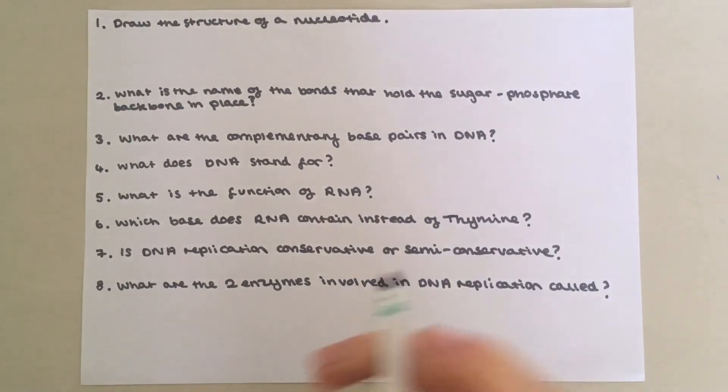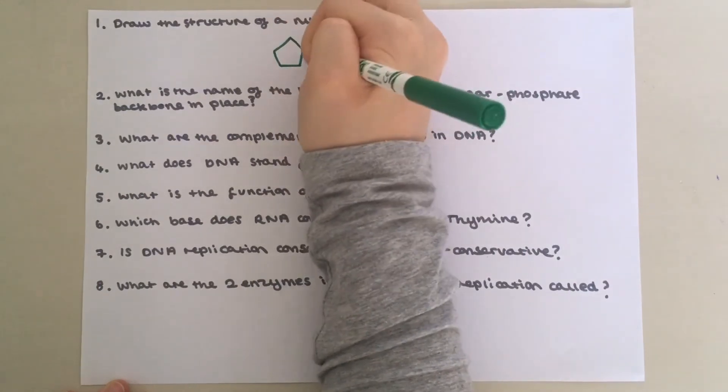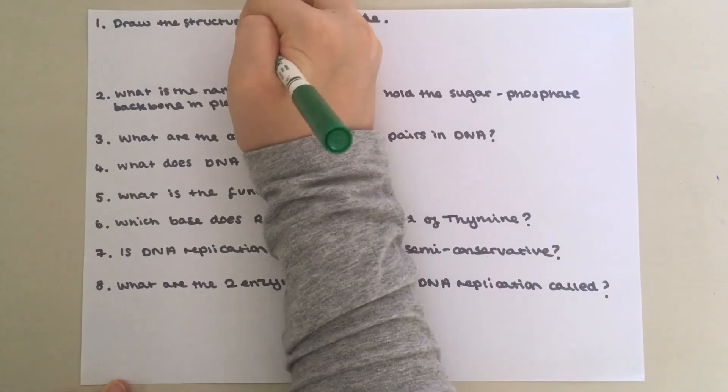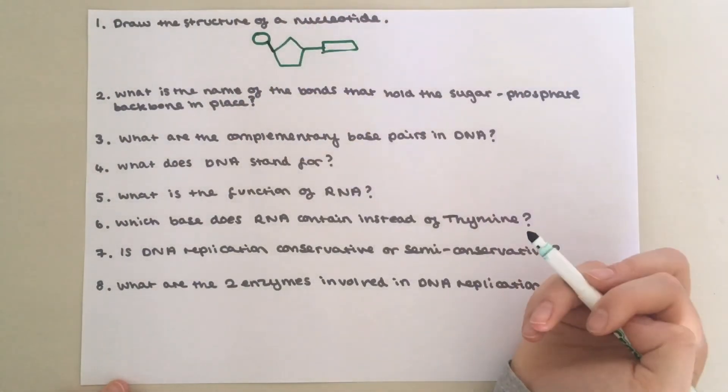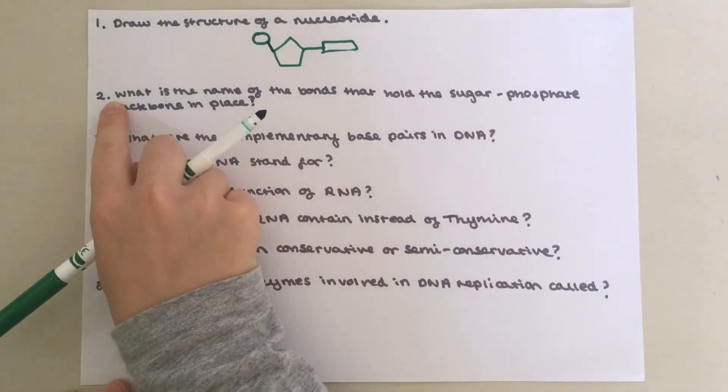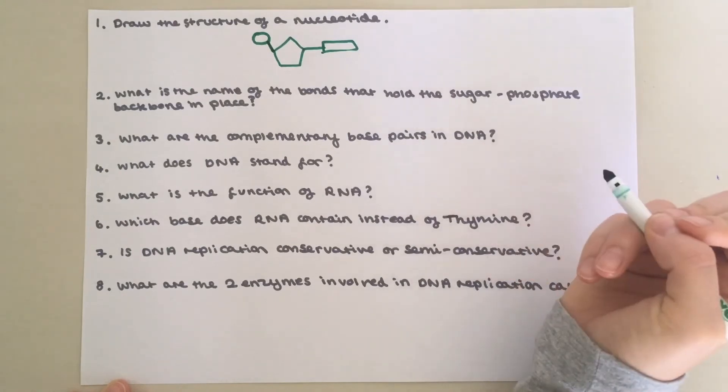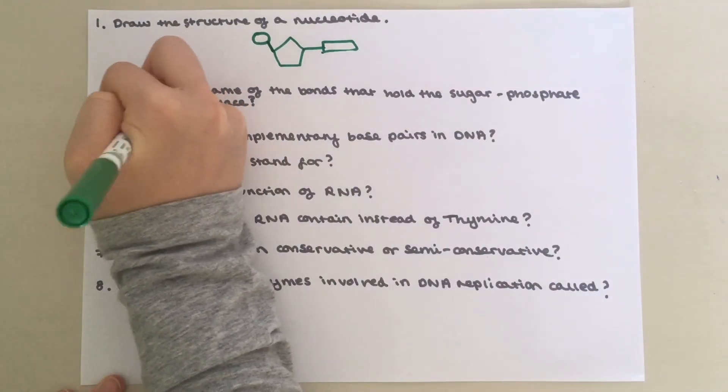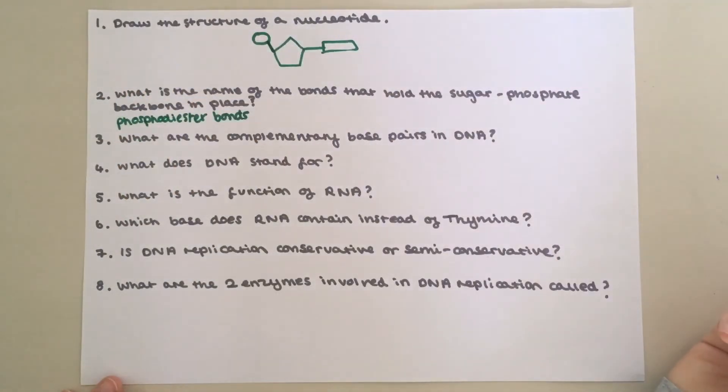So now pause the video and have a go at these questions. Question one, draw the structure of a nucleotide. So you've got the pentose sugar here, then you've got a nitrogenous base and a phosphate group. Remember, this is a glycosidic bond and this is an ester bond. Question two, what is the name of the bonds that hold the sugar phosphate backbone in place? Those are phosphodiester bonds and they form in condensation reactions.